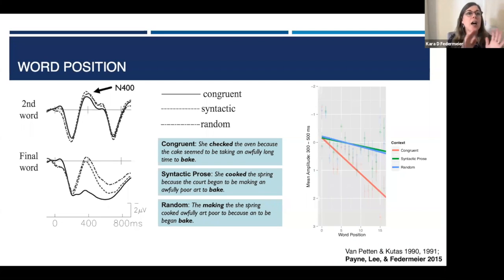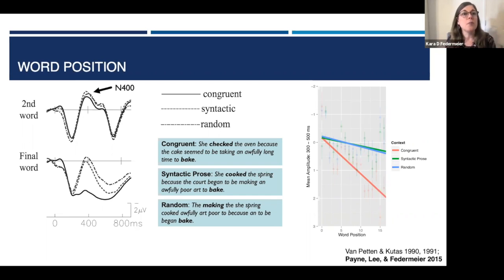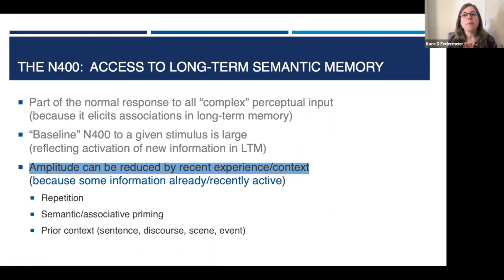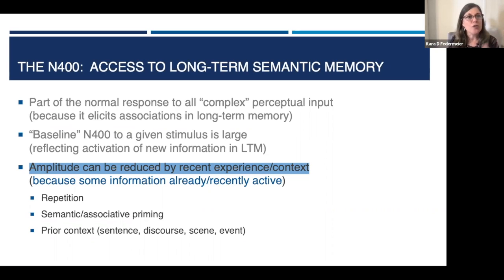The real effect on N400 amplitude is always in the form of reductions or facilitations when, because of recent experience or context, some of the features normally required to be newly activated in response to an input are already in play. This can be because the stimulus is being repeated, because of priming from a related stimulus, or because of the accrual of information across a larger context — a sentence or a discourse. This context-based facilitation is graded and interestingly independent of the larger state of the semantic system.